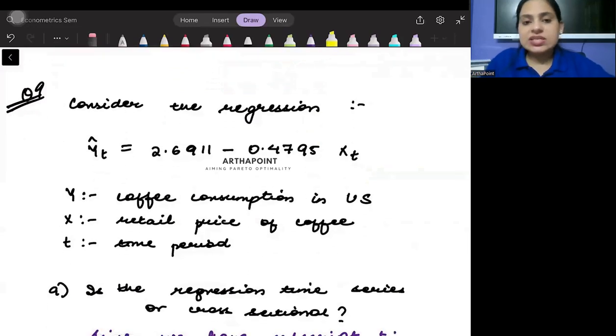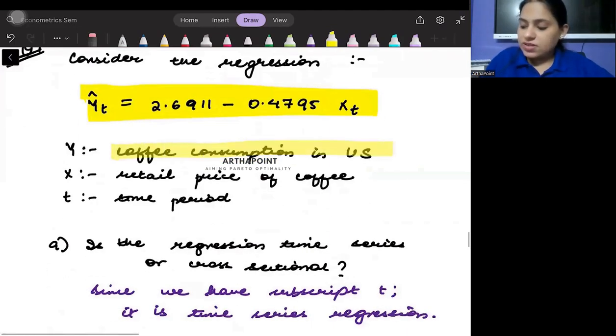Okay, let's look into the next question. Consider the regression equation. You're given this regression equation where Y represents coffee consumption in the US, X represents the retail price of coffee, and t is the time period.